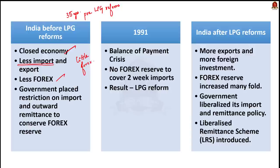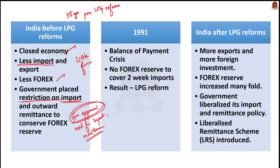Only important items were allowed to be imported, and that too with government approval. The government also limited the amount of dollars that could be carried when visiting foreign countries. Even outward remittance from the country was restricted. Suppose you wanted to send money to a friend or relative staying in a foreign country — you could do so only after getting government approval, and only a limited amount was permitted. This was done to conserve India's limited forex reserves at that time.